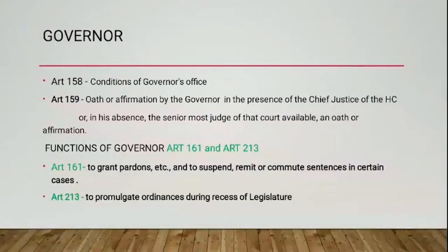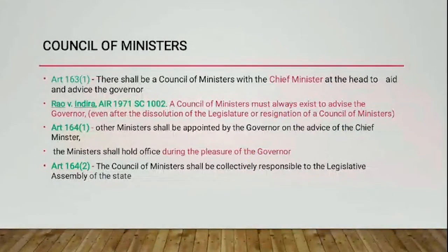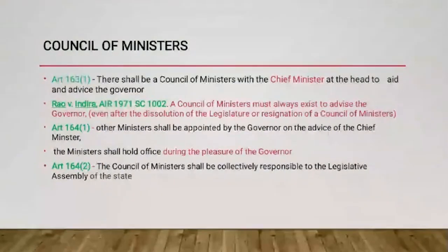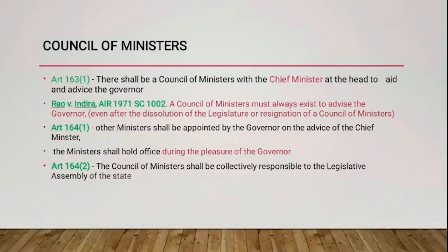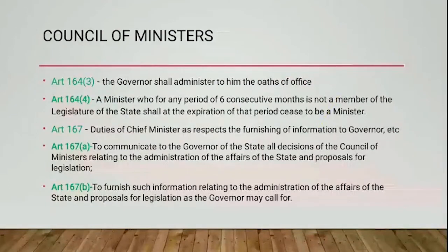The Council of Ministers for the state is under Article 163, which provides for the Council of Ministers to aid and advise the Governor. The duties of the Chief Minister with respect to furnishing information to the Governor are under Article 167 — it shall be the duty of the Chief Minister of each state to communicate to the Governor all decisions of the Council of Ministers relating to the administration of the affairs of the state and proposals for legislation, and to furnish such information as the Governor may call for.